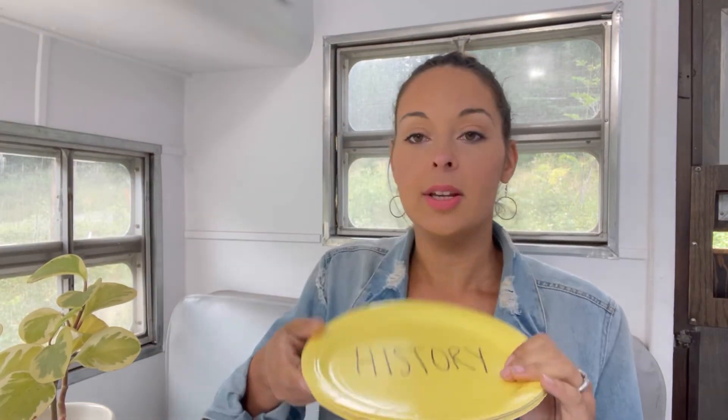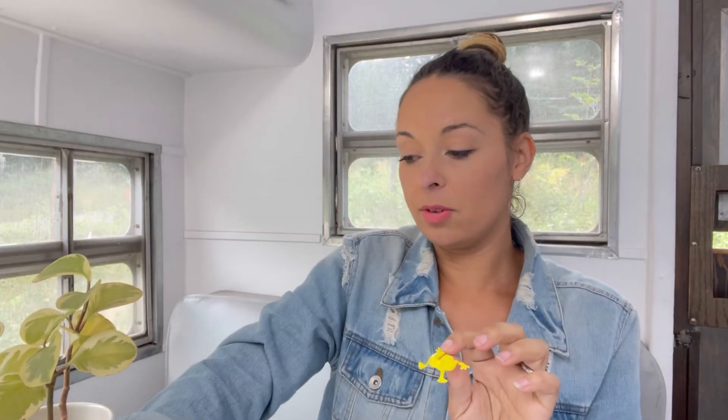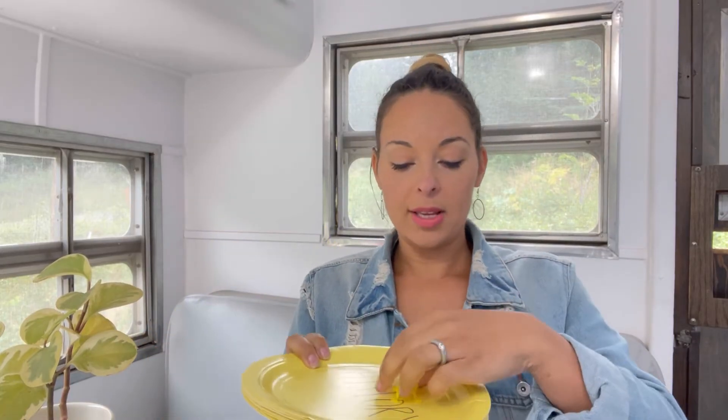For review this week, we are probably going to use our review game plates that have all the subjects written on them. We'll put the plates on the ground or on the table, and use little frog hoppers to hop onto them. Whatever subject we land on, that's the subject we review. These are the frog hoppers where you press the back and they hop. That's how we're going to do review.